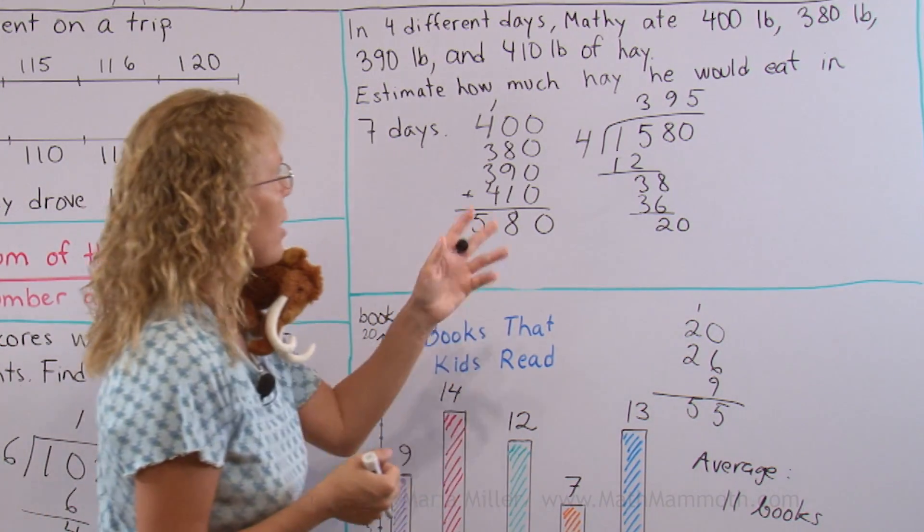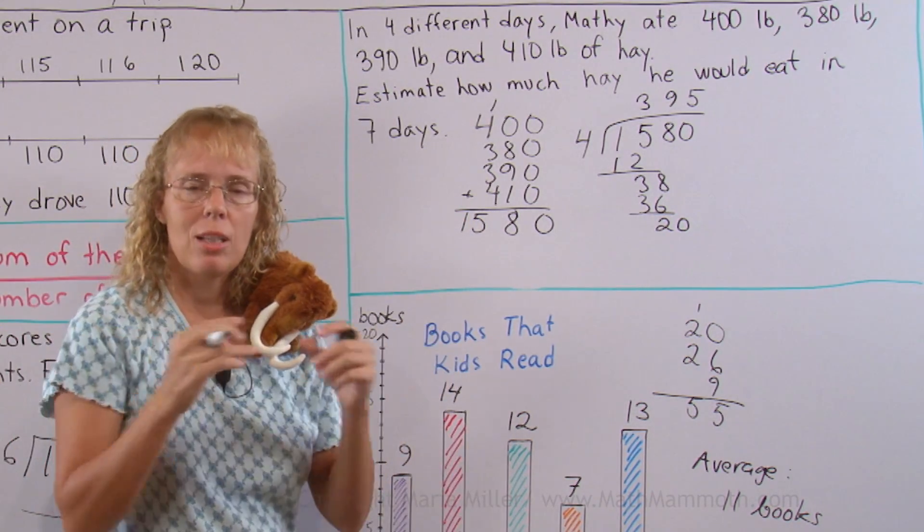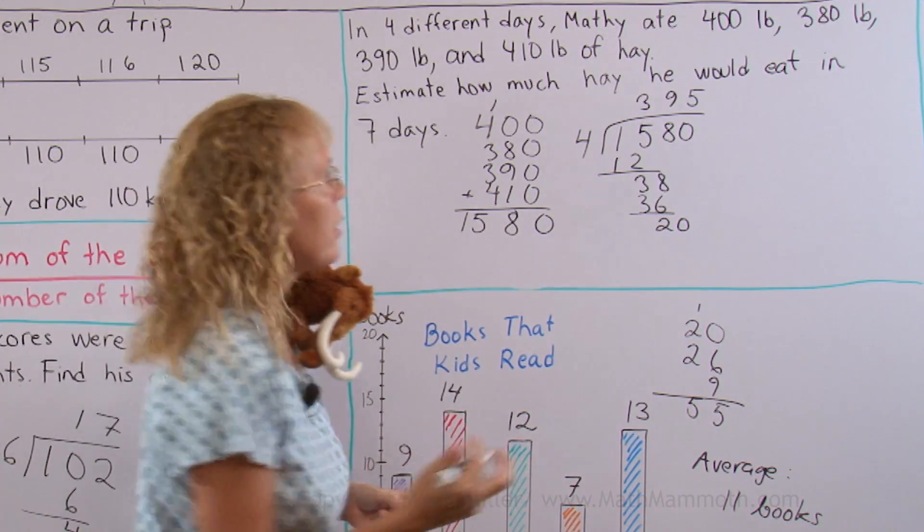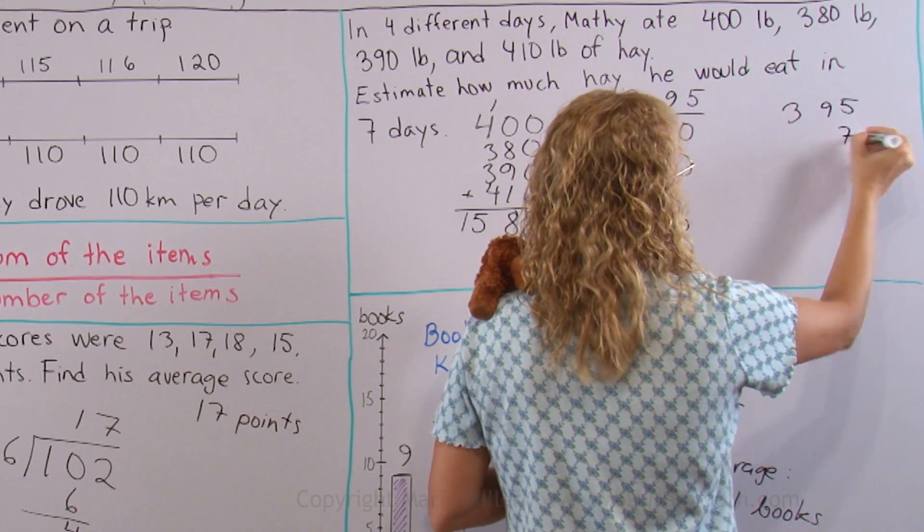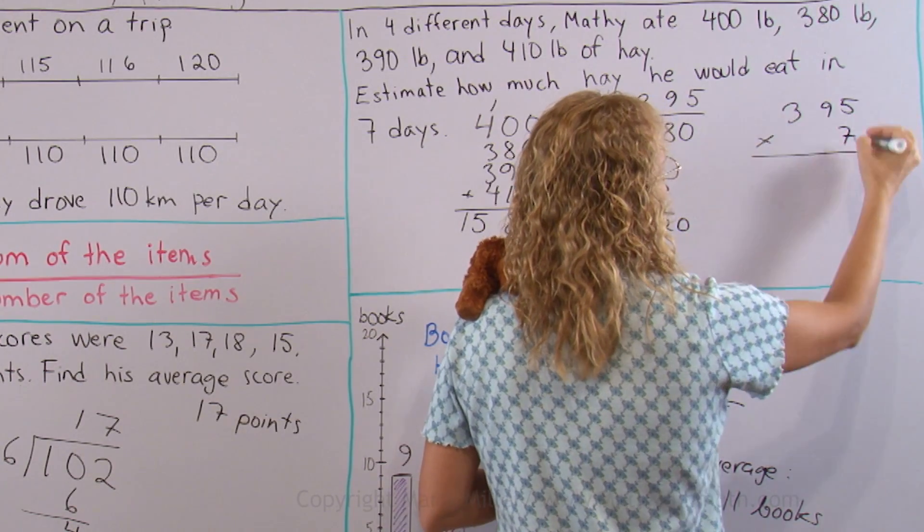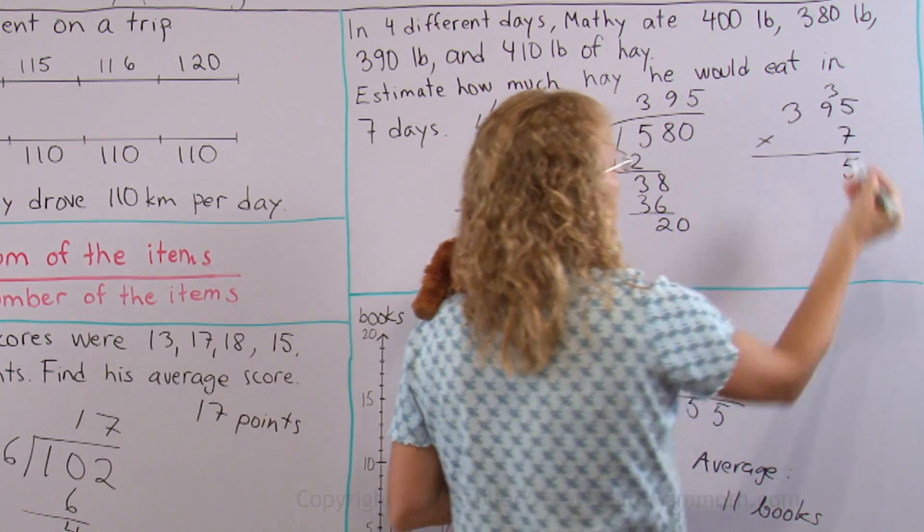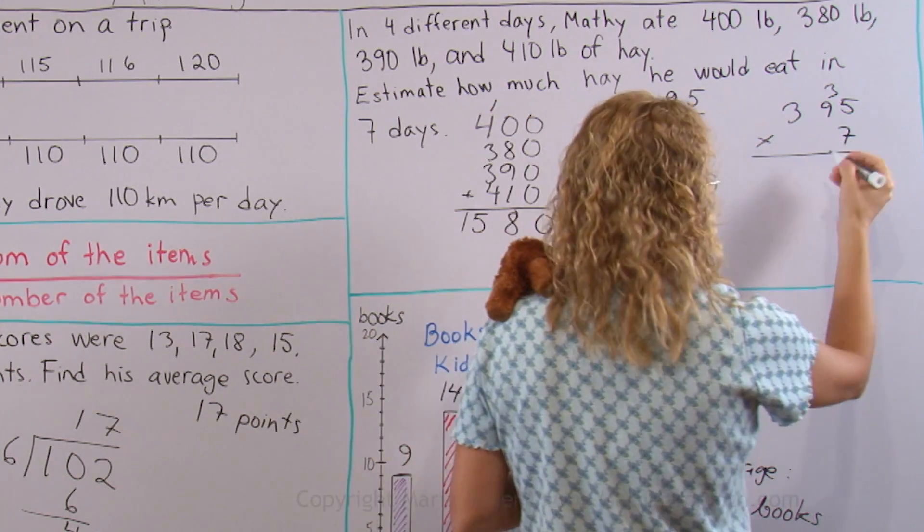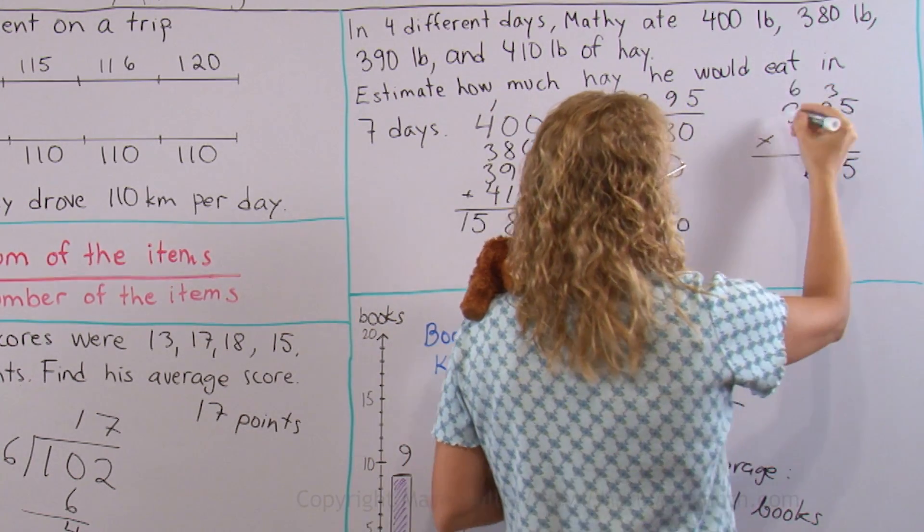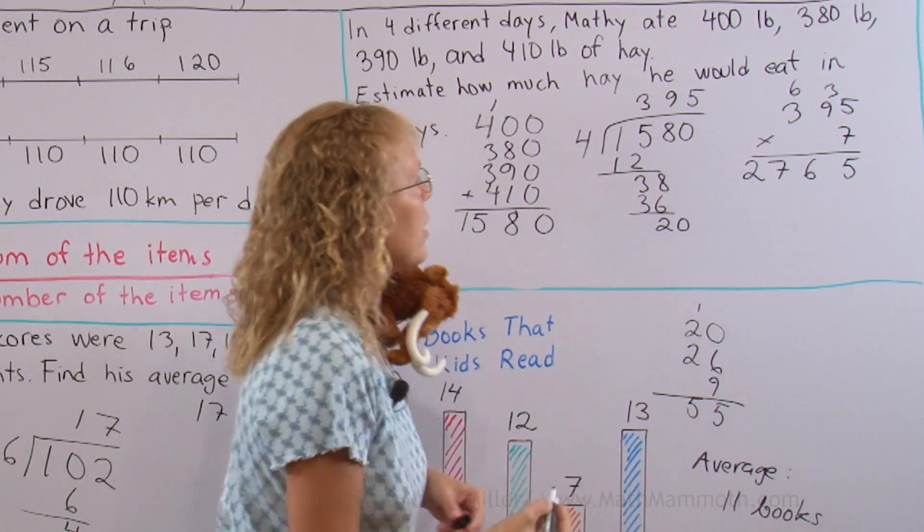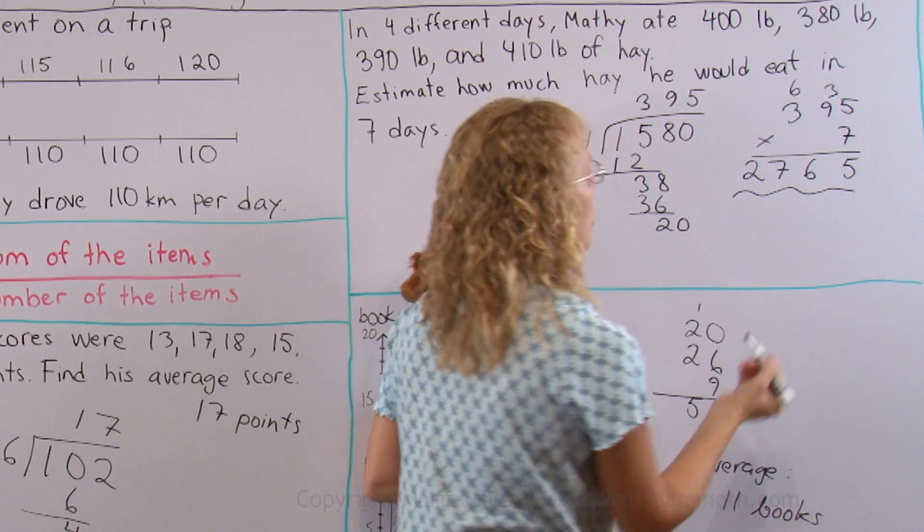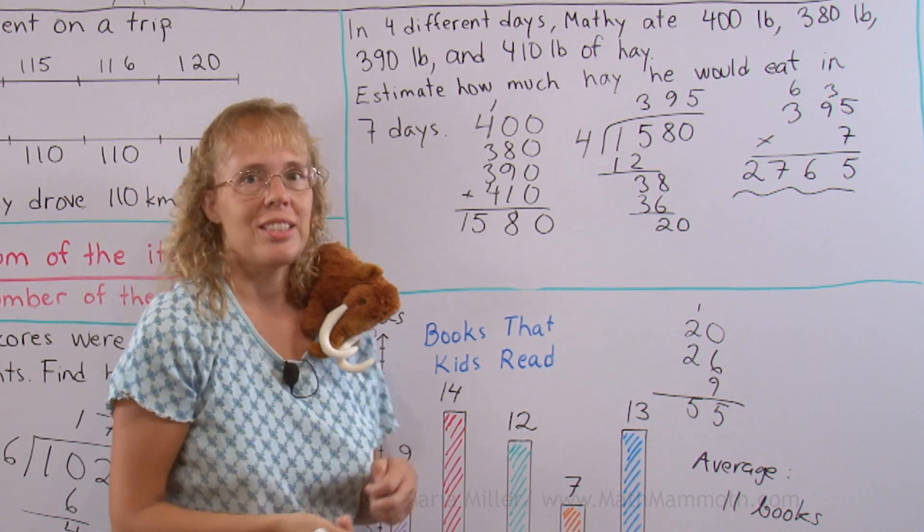And now we multiply that times 7 to get how much he would eat in 7 days. 395 times 7. 7 times 5, 35. 9 times 7, 63. Plus 3, 66. And then 21 plus 6, 27. Okay, so that's our final answer. 2765 pounds in 7 days.